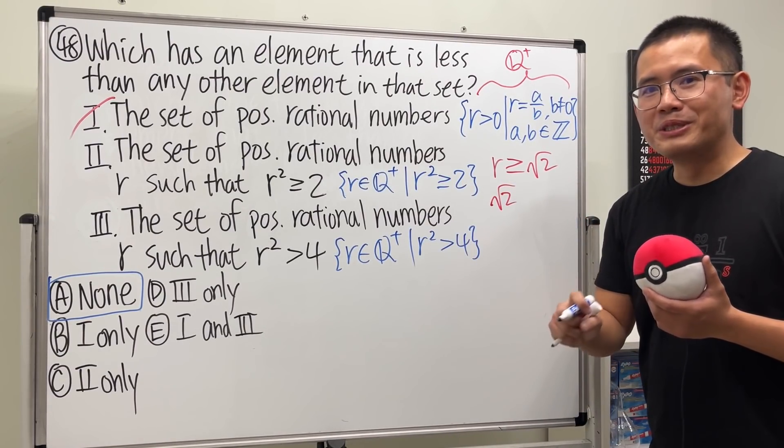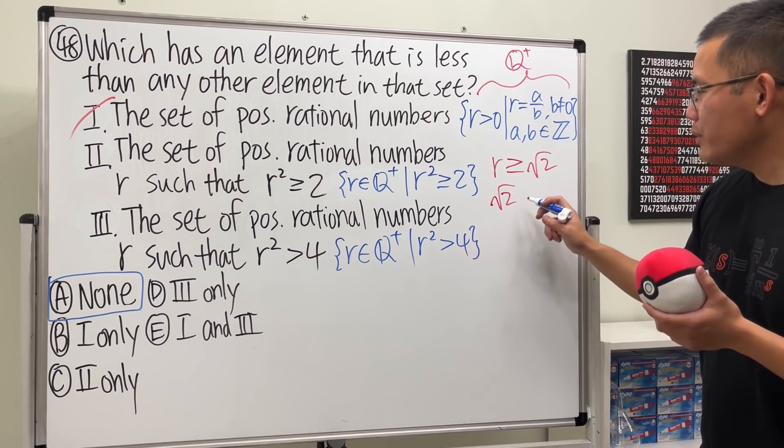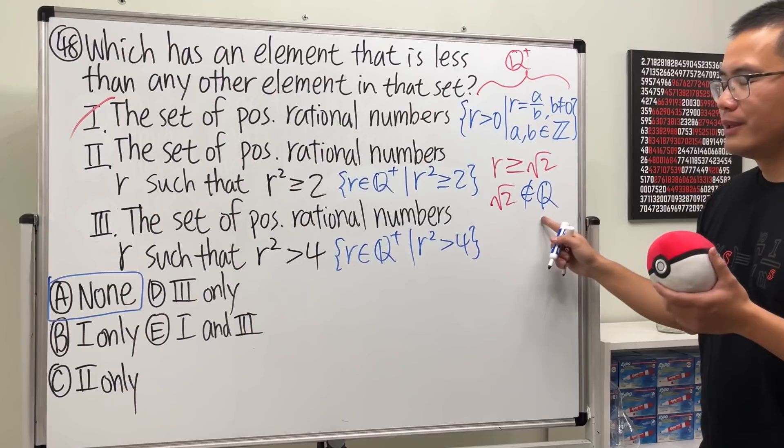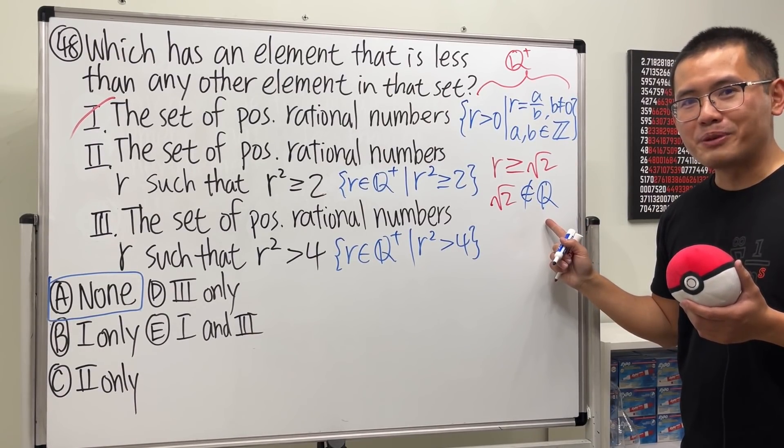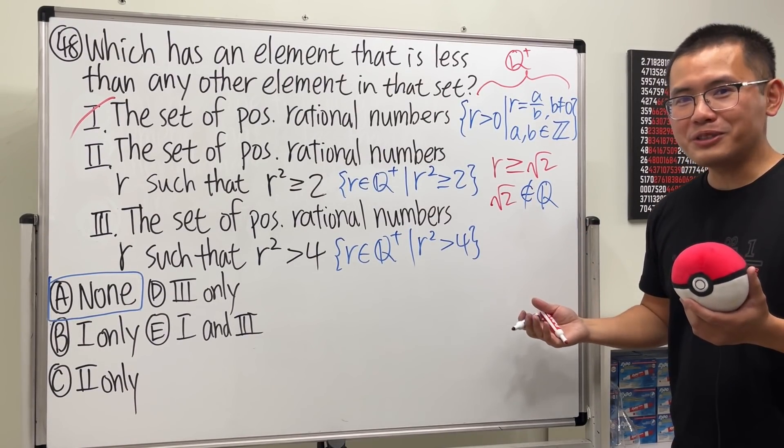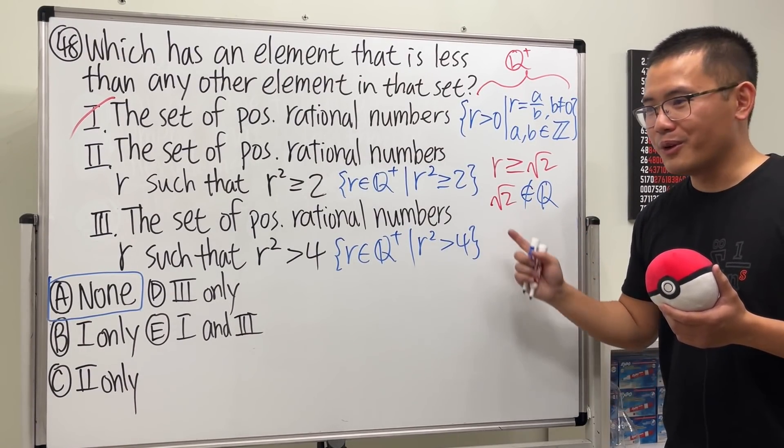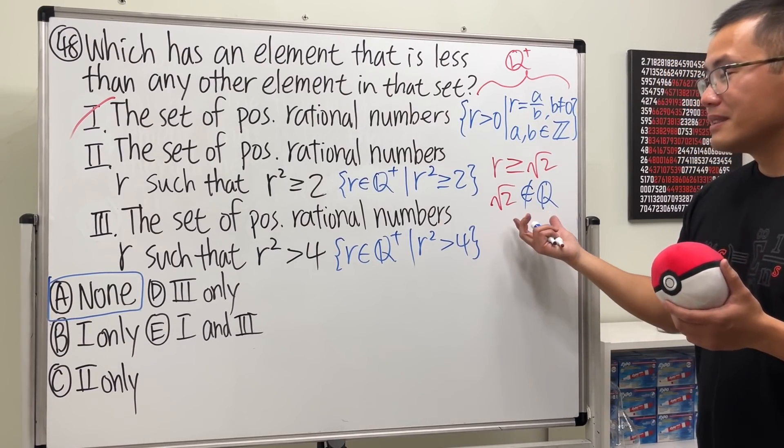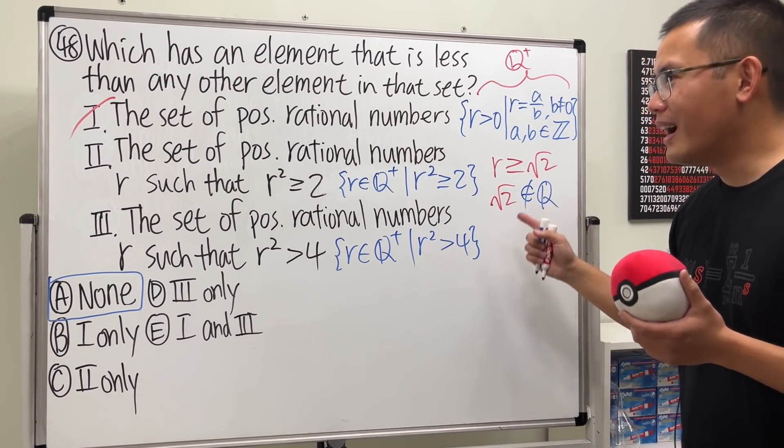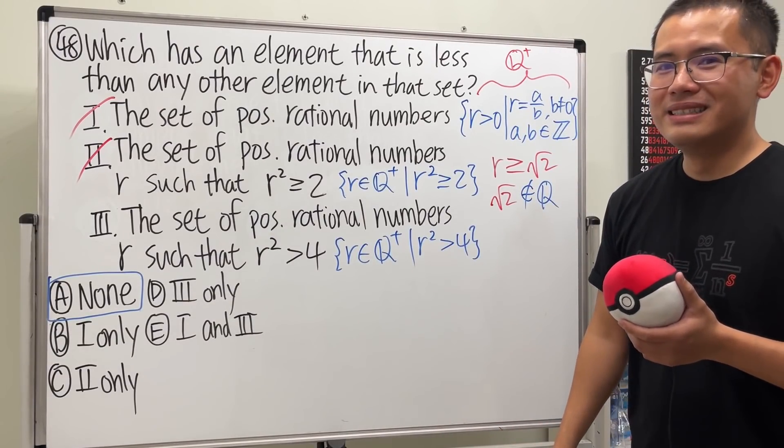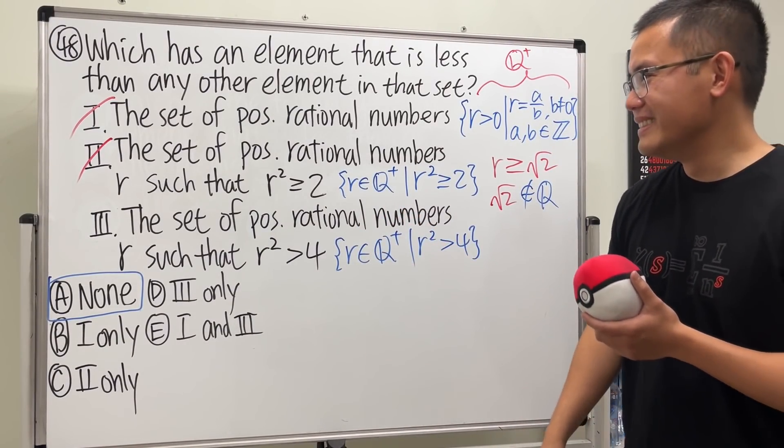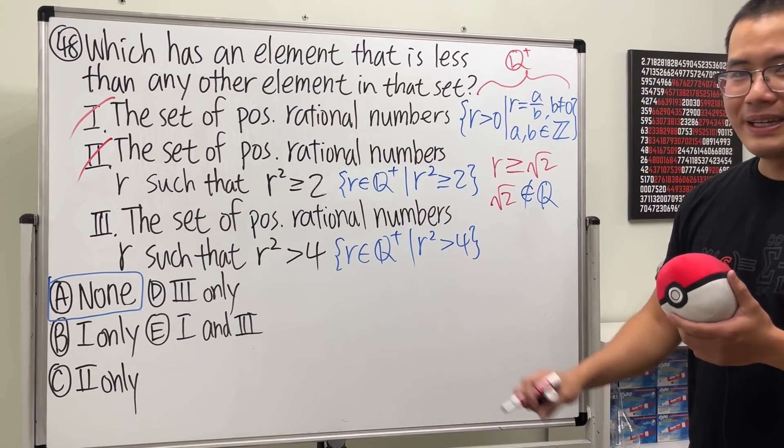Okay, again we have the equal sign, so square root of two should be the smallest element for this, but the answer is no, because square root of two does not belong to the set of rational numbers. Square root two is not rational. I have a proof of that a long time ago. Go ahead and check that if you want. That's why, but yeah, that's why number two, it's not the answer either.